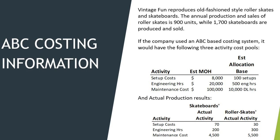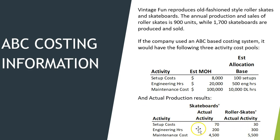If they use ABC, here is the cost pool — the data we need to know. They have three different activities, here's the amount of overhead estimated for each one, and here's the total amount of activity for each. And here's the actual usage data for skateboards and roller skates, which we'll need when we start allocating overhead to each product.